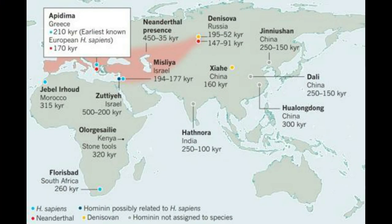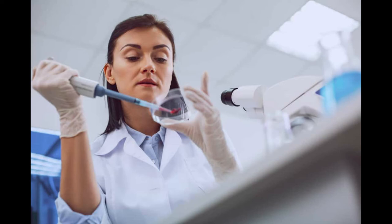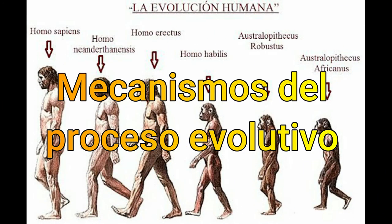La primera migración de homínidos fuera de África se ha datado alrededor de los 2 millones de años antes de Cristo. Allí podemos ubicar a Homo erectus, en la isla de Java, Indonesia. Esta migración originó a muchos otros registros, incluyendo a los neandertales, floresiensis y denisovianos. Junto a la paleoantropología, se han unido los avances en materia de análisis genético, con lo cual se ha expandido nuestro entendimiento sobre nuestros orígenes.